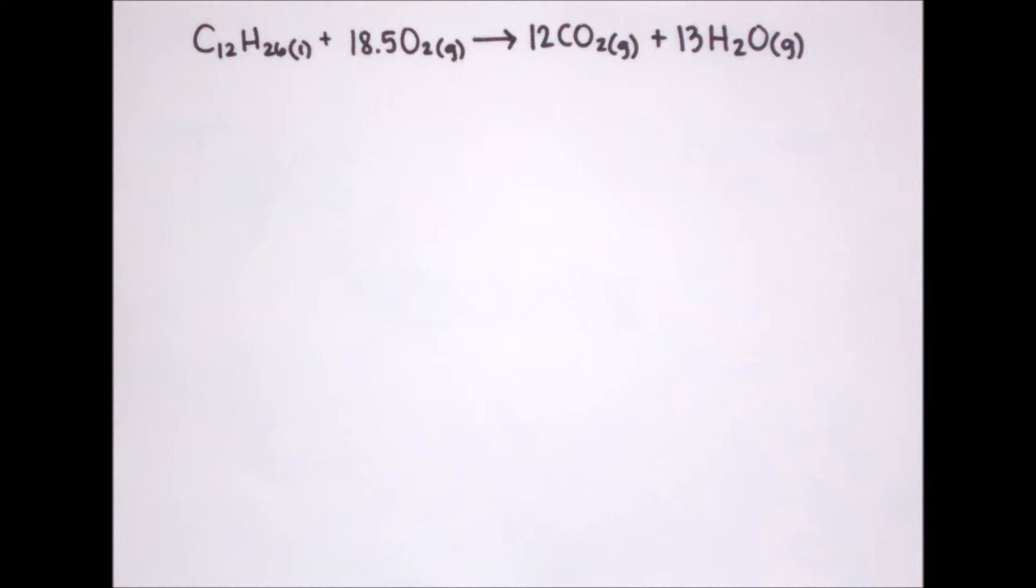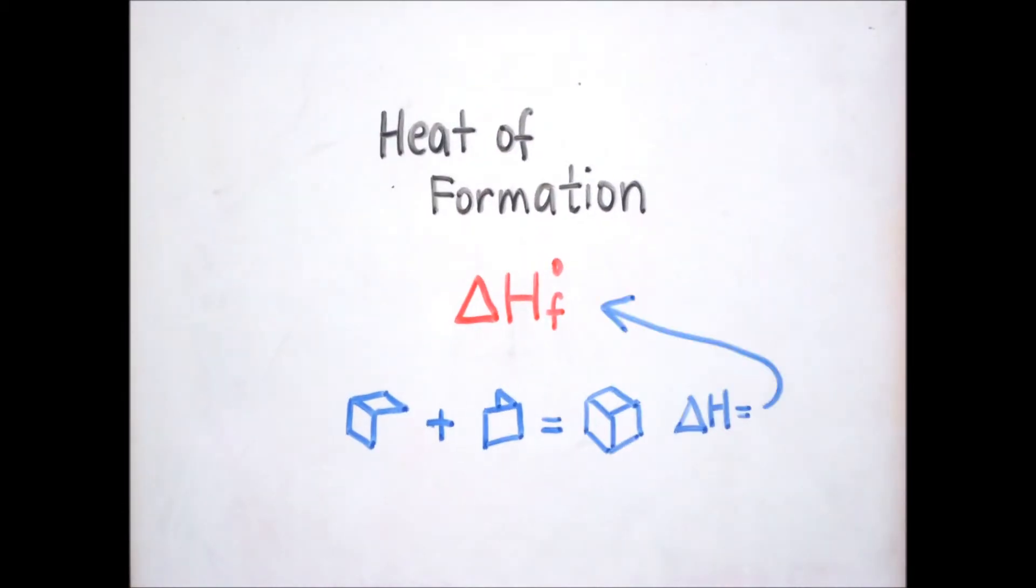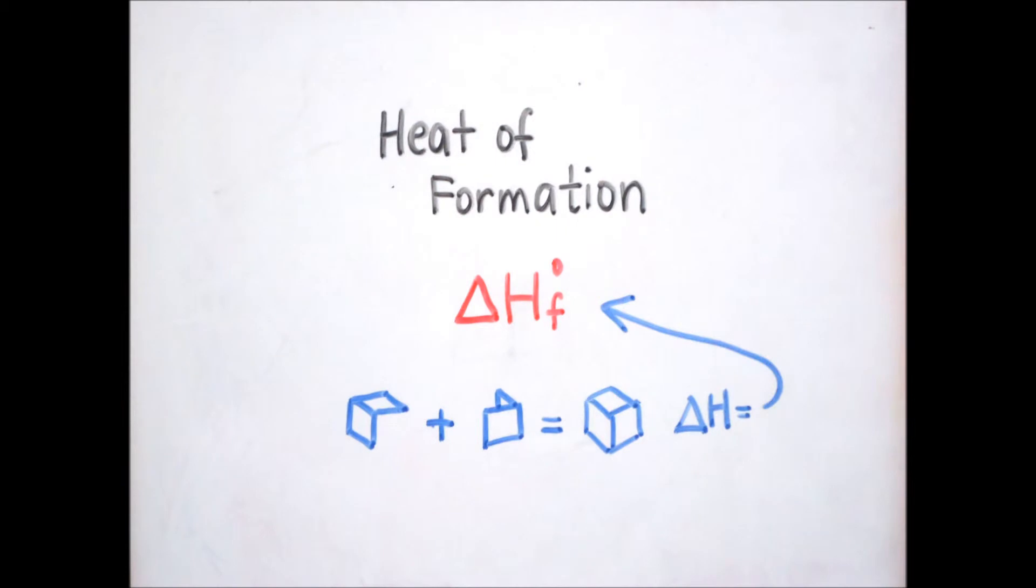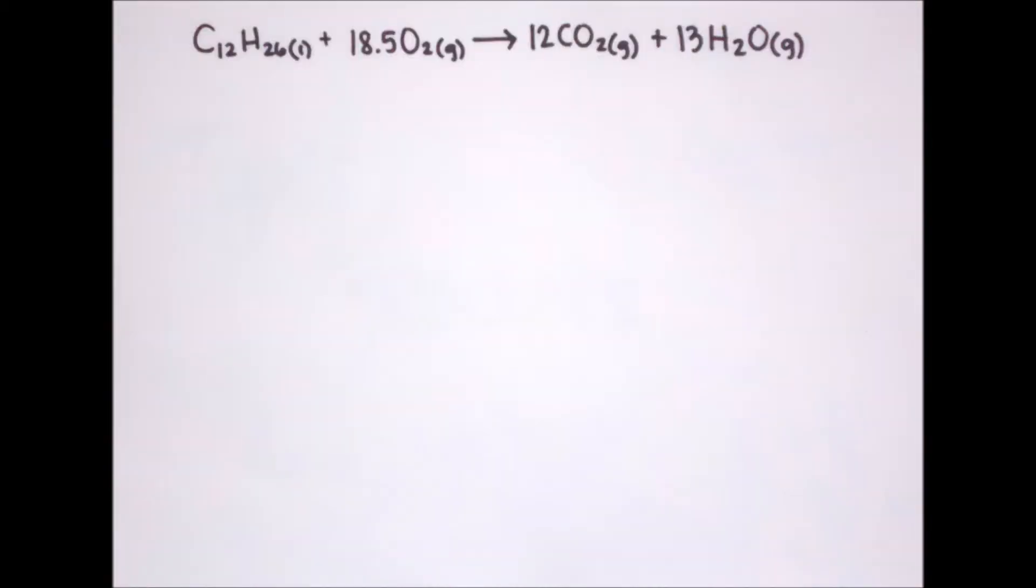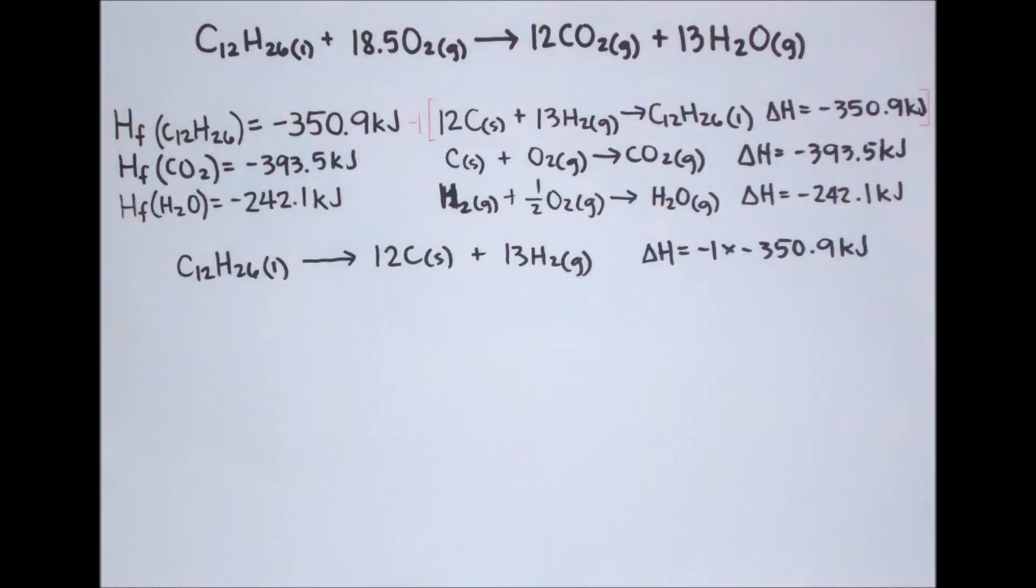To use Hess's Law, we will need the heat of formation of all the substances involved in the reaction. Heat of formation is the change in enthalpy in the formation of one mole of a substance from the standard or naturally occurring form of the elements. Since oxygen naturally occurs as O2, its heat of formation is zero. That leaves us with three equations altogether. The next part is a tricky bit when we manipulate the equations to cancel unwanted substances and be left with the equation for the combustion of kerosene. We want dodecane to be in the reactants, so let's invert its equation, that is, multiplied by negative 1, including the change in enthalpy. To cancel carbon, multiply the second equation by 12. To cancel hydrogen, multiply the third equation by 13. All that's left is to add up the remaining substances and their enthalpy changes.